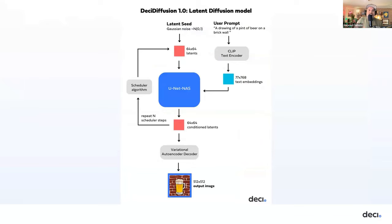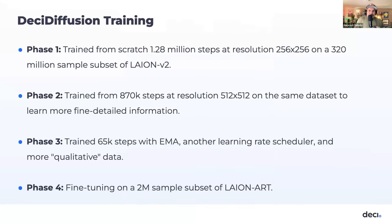The main architecture of Desi Diffusion 1.0 retains the same foundational elements as Stable Diffusion 1.5 — the variational autoencoder and the CLIP pre-trained text encoder — but the key innovation was substituting the UNet in SD 1.5 with our more efficient UNet NAS. This streamlines the model by reducing the number of parameters, which means greater computational efficiency.